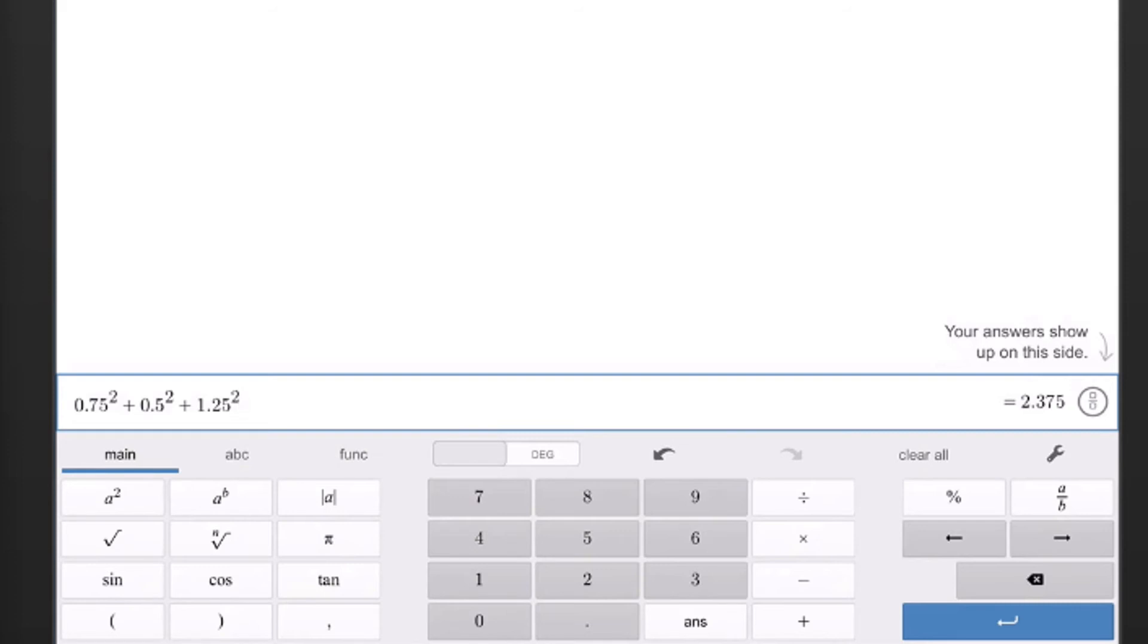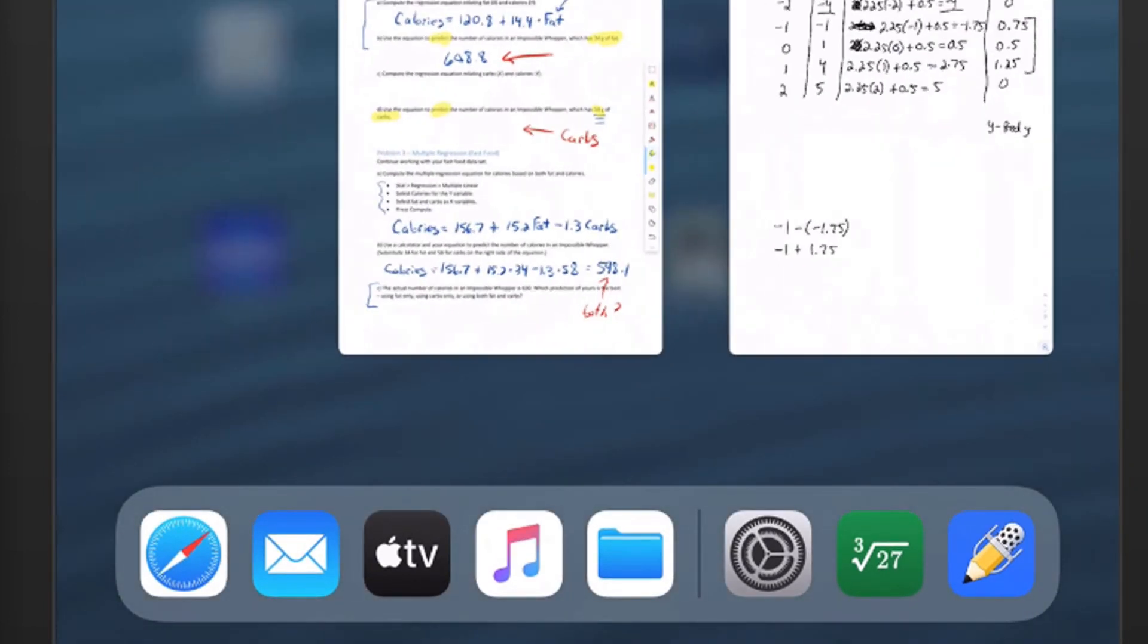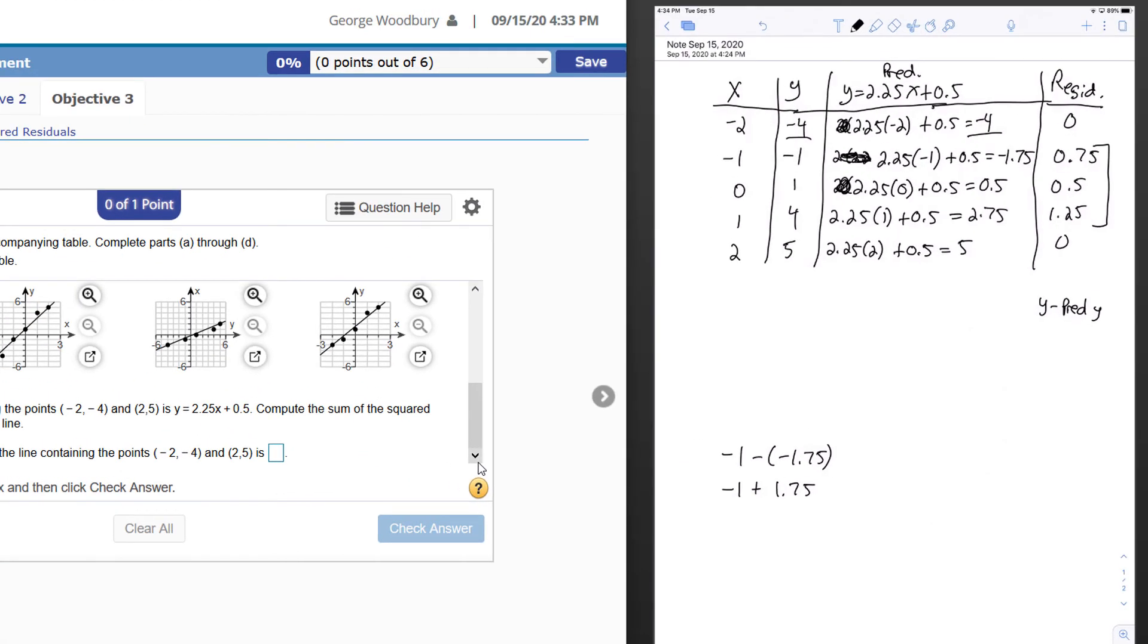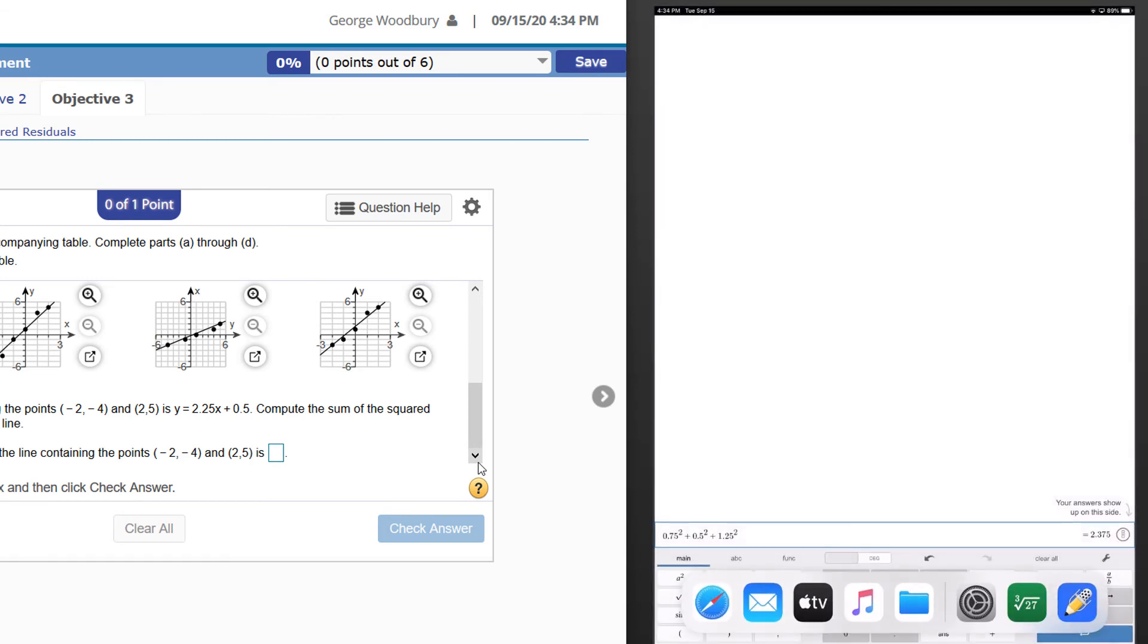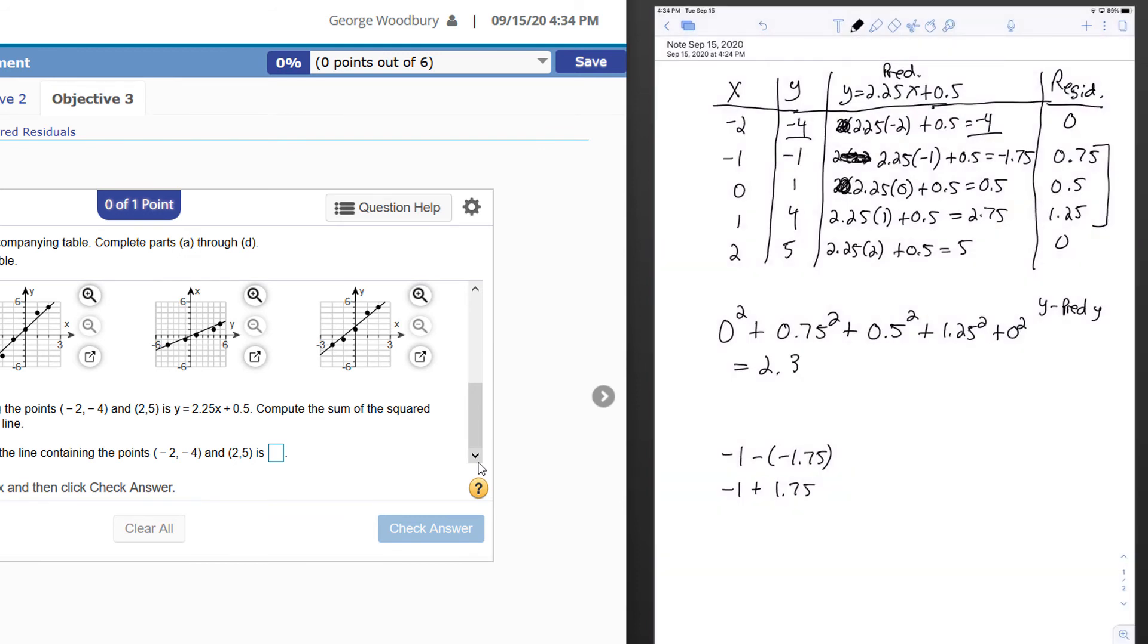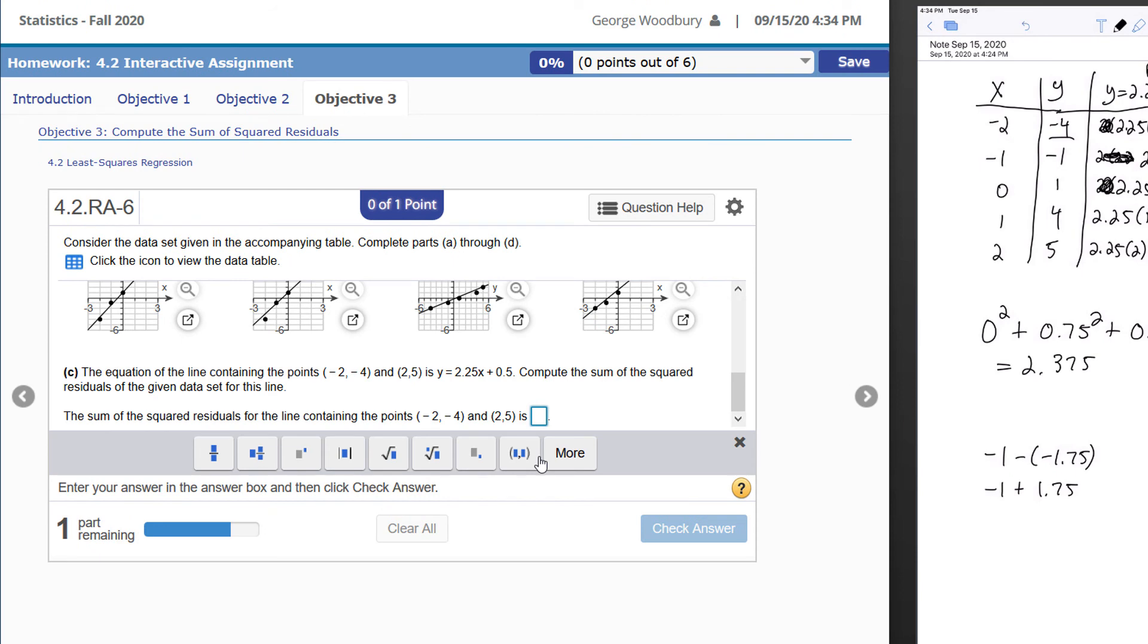0.75 squared plus 0.5 squared plus 1.25 squared, and I can see the result is 2.75. That's the sum of the squared residuals. If you're going to do this on your calculator, you would push 0 squared plus 0.75 squared plus 0.5 squared plus 1.25 squared plus 0 squared, and again that equals 2.75. So I enter that for my answer in part C.